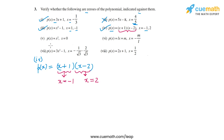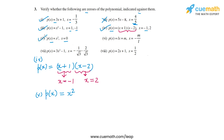Now part 5: p(x) = x², and the value given is x = 0. It's obvious just by observation that x = 0 is a zero of p(x). So that's part 5.